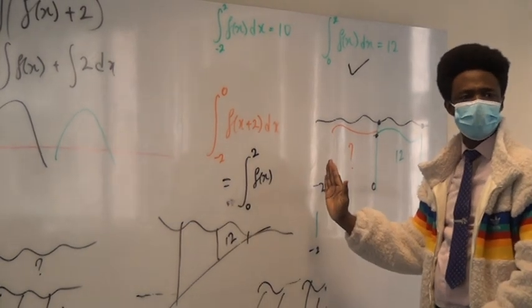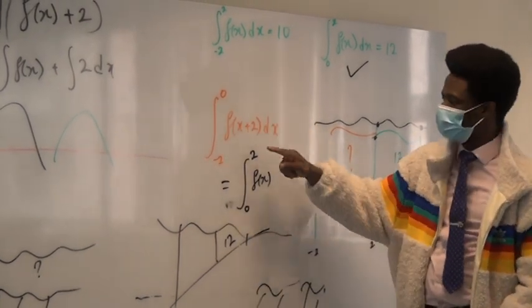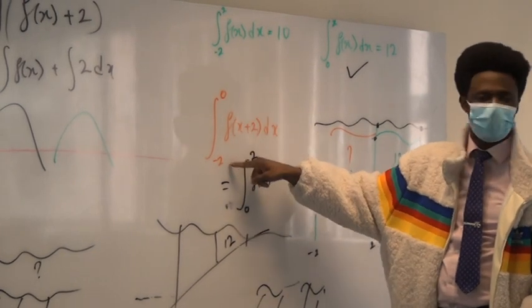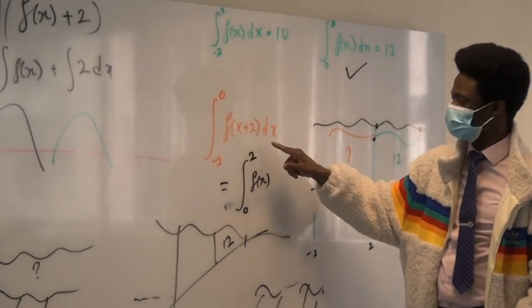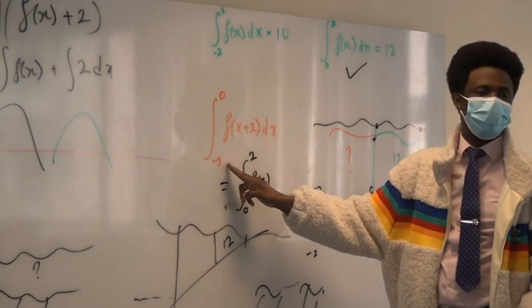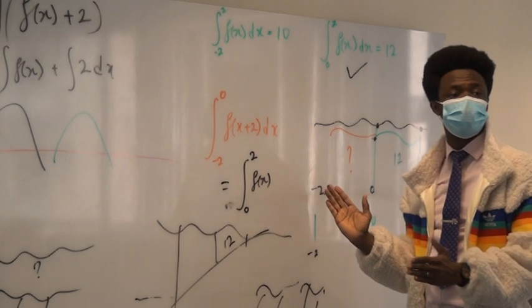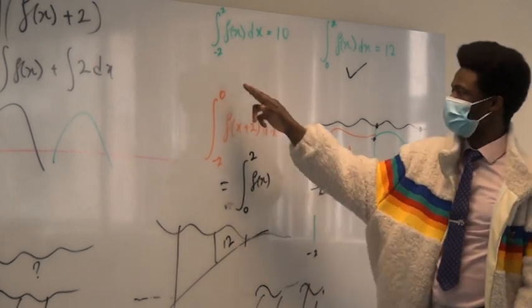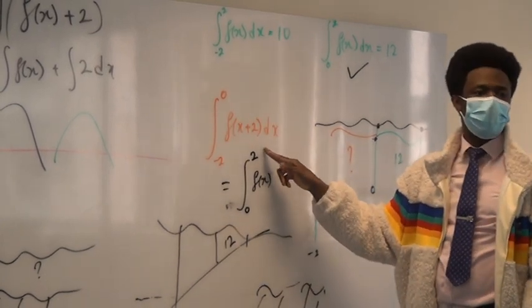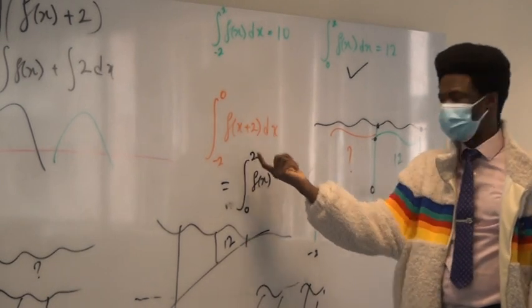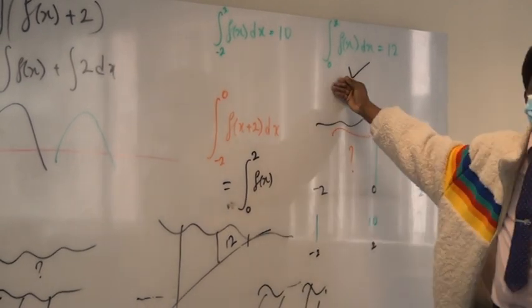If we shift it back to the right, we are not considering zero to minus two anymore. Now we are considering two to zero because shifting means even the region is being shifted, the interval is being shifted. Shift it two forward: zero to two. And the function that we now produce is f of x, which is one of the given information.